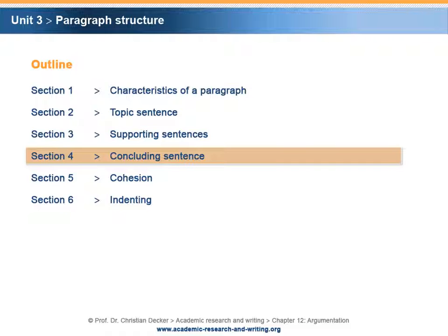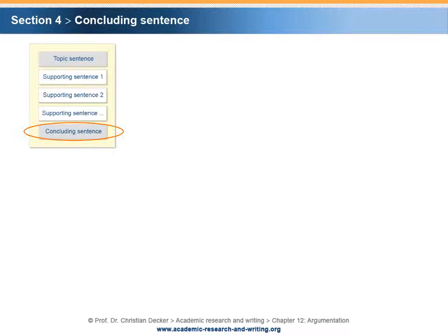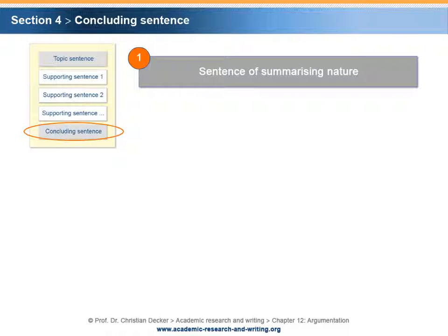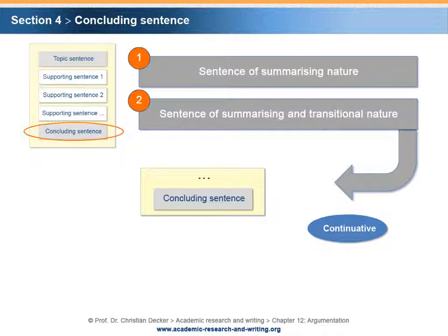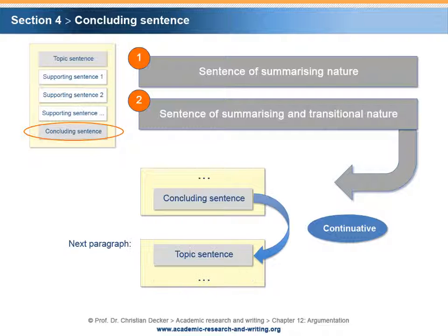Section 4: Concluding sentence. The well-structured paragraph typically ends with a concluding sentence. A concluding sentence can be of a summarizing or transitional nature. It can even provide both a summarizing and transitional function. Ideally, the final sentence of a paragraph is continuative — that is, it presents a step forward referring to the main idea stated in the topic sentence and leads on to the next main argument that will be dealt with in the next paragraph.